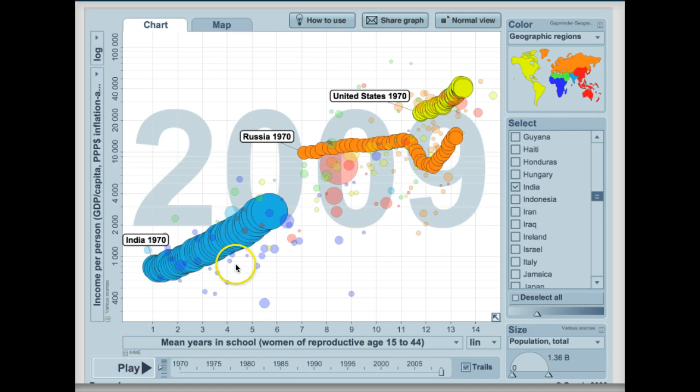As stated before, the United States is pretty wealthy compared to other countries. But we still have had a pretty steady increase for our income, and an increase in the mean number of years for women in school. So that is great for our country.